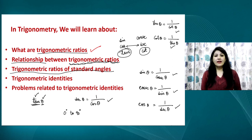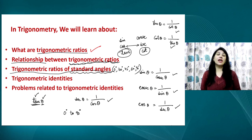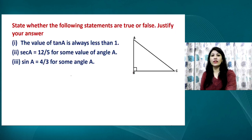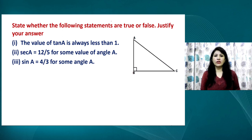Standard angles here means 0 degree, 30 degree, 45 degree, 60 degree, and 90 degree. Today we will learn the values of all T-ratios for these 5 particular angles. We will also study trigonometric identities. Let us start with a question based on the topic from our previous session.